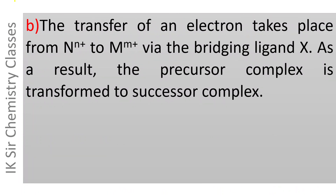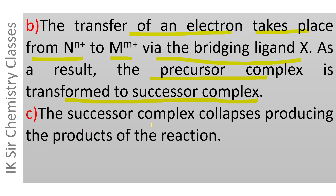In the next step, the transfer of electron takes place from N^(N+) to M^(M+) via the bridging ligand X. As a result, the precursor complex is transformed into the successor complex. Finally, the successor complex collapses, producing the products of the reaction.